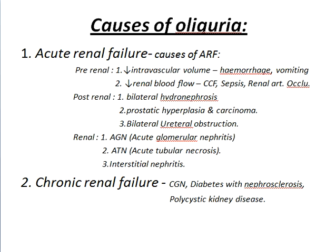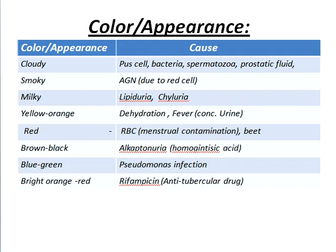Interstitial nephritis is also a renal cause. Then, about the causes of chronic renal failure: chronic glomerulonephritis, diabetes, nephrosclerosis, and polycystic kidney disease.